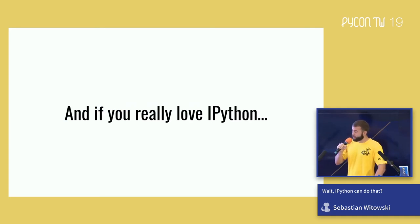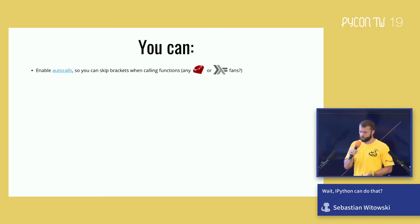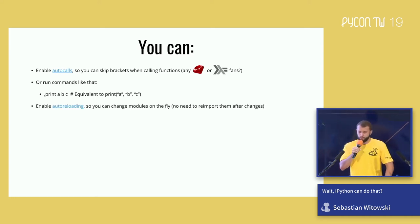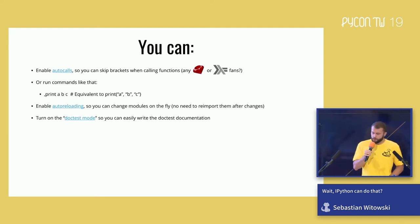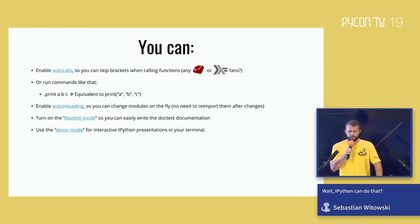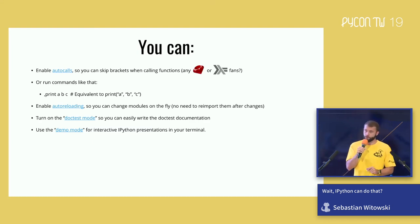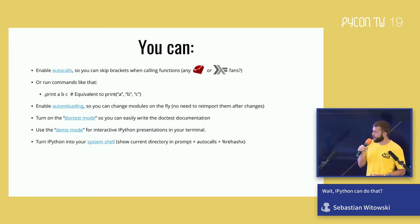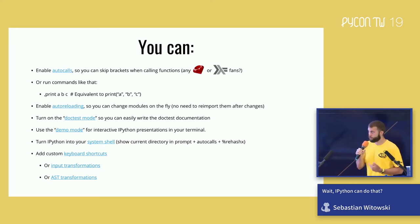If you really love IPython there's still a bunch of interesting stuff you can do. You can enable auto calls so you don't have to use brackets when calling functions. Or start a line with a comma so you don't even have to put quotes around the arguments. You can enable auto reloading so imported modules reload on the fly. If you're writing doctests you can turn on doctest mode to make copying code from IPython much easier. You can use demo mode to create nice interactive demos in the terminal. You can even use IPython as your shell, add custom keyboard shortcuts, custom input transformations, or if you're brave enough, AST transformations.